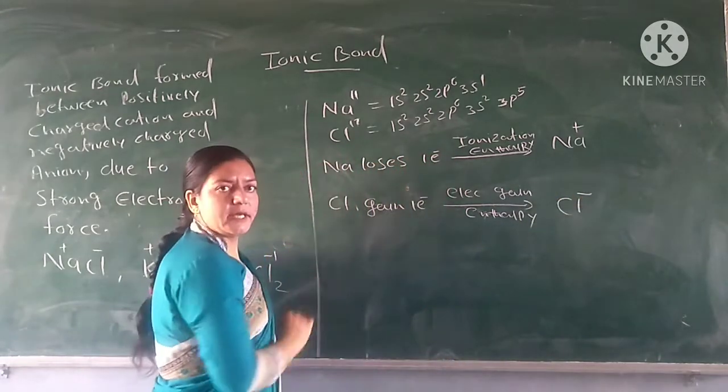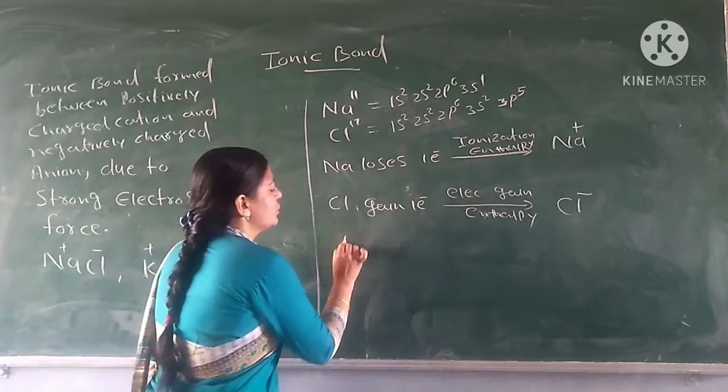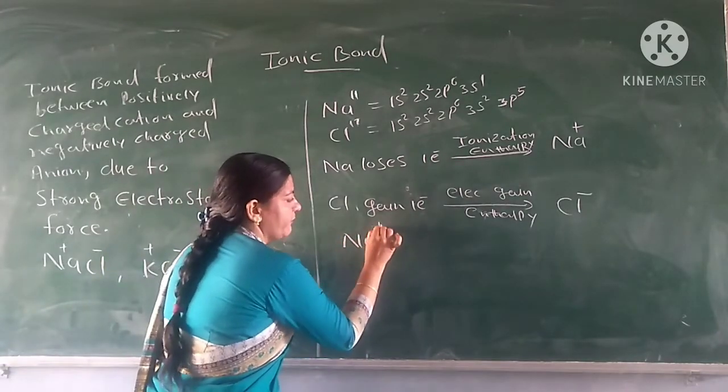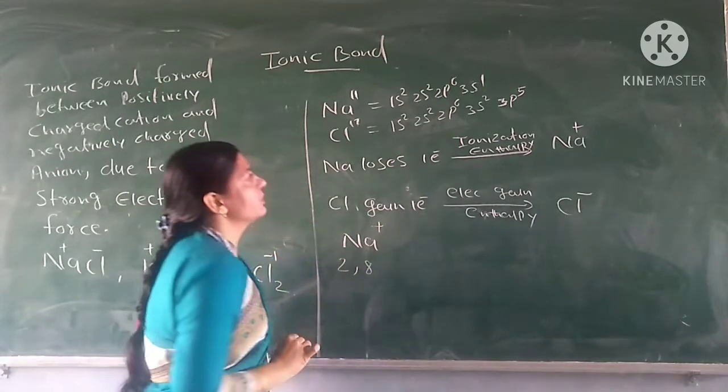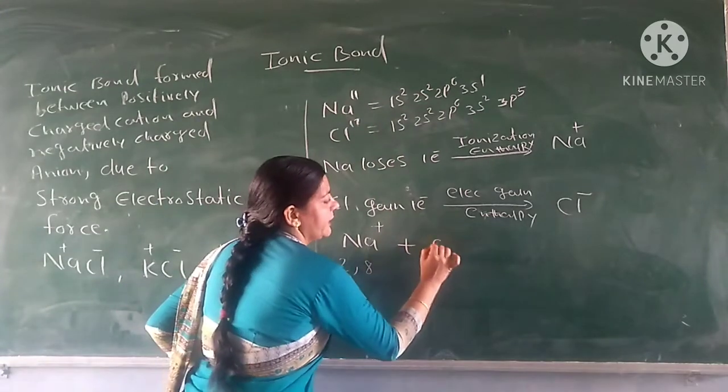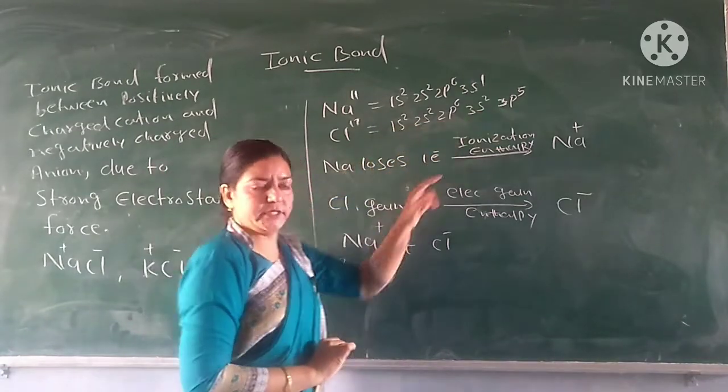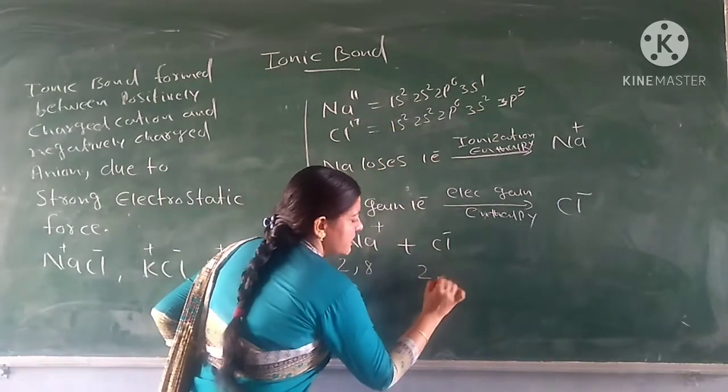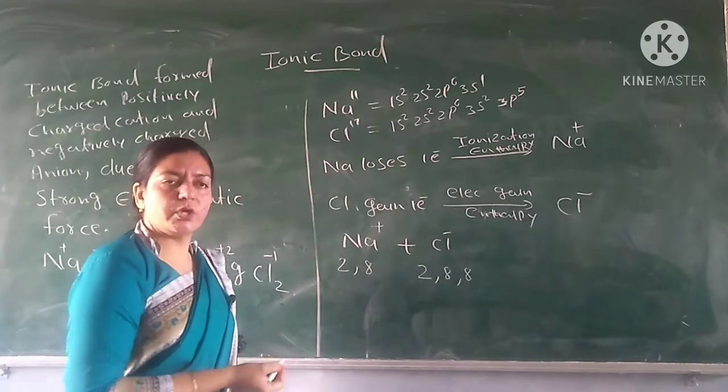When sodium loses one electron, it becomes Na+ with configuration 2,8. When chlorine gains one electron, it becomes Cl- with configuration 2,8,8. Both have completed their octets.